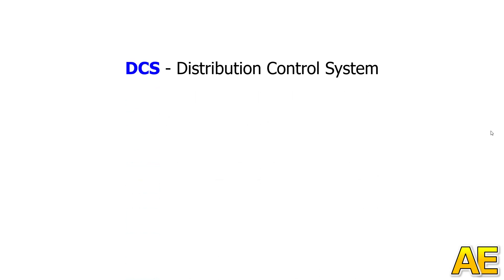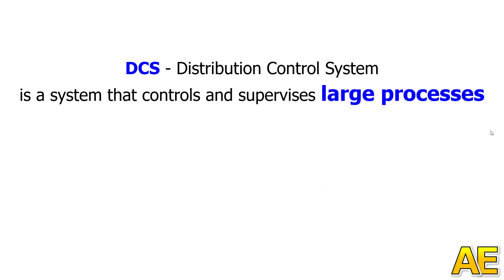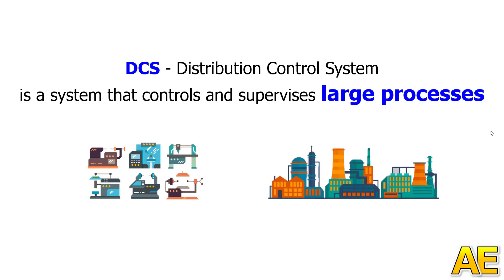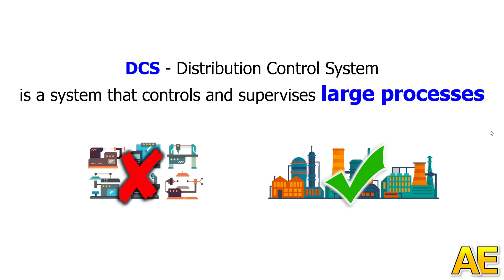DCS stands for Distributed Control System — a system that controls and supervises big processes. What is the difference between PLC and DCS? At first glance, the difference is the scope of control. We have the machine or small process like one filling and packing line versus the big process or a plant. DCS is not for a machine or small process — DCS is for the big process or a plant.